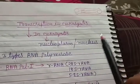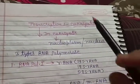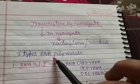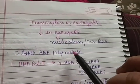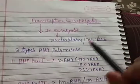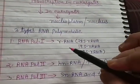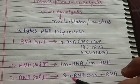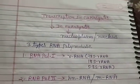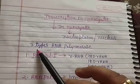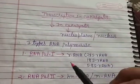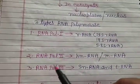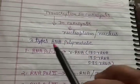Prokaryotic cells have a single RNA polymerase enzyme that helps transcription for the formation of non-genetic RNA like rRNA, mRNA, snRNA, and tRNA. But in eukaryotes, there are three types of RNA polymerase enzymes: RNA polymerase I, RNA polymerase II, and RNA polymerase III.